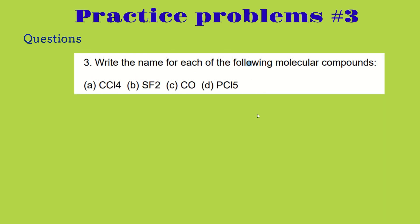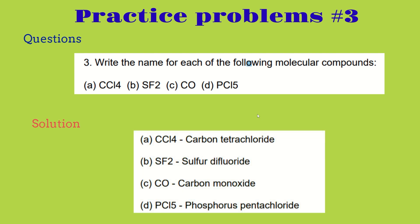For practice problem three, write the name of each of the following molecular compounds: CCl4, SF2, CO, and PCl5. For CCl4, C is carbon and Cl is chloride, and 4 means tetra, so it's carbon tetrachloride. For SF2, that's sulfur difluoride. For CO, C is carbon and O is oxygen — remember that for binary molecular compounds we add 'mono' for the second element — so it's carbon monoxide. For PCl5, P is phosphorus, Cl is chloride, and 5 means penta, so it's phosphorus pentachloride.